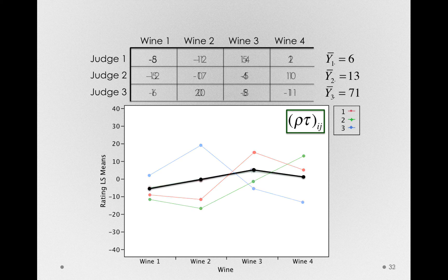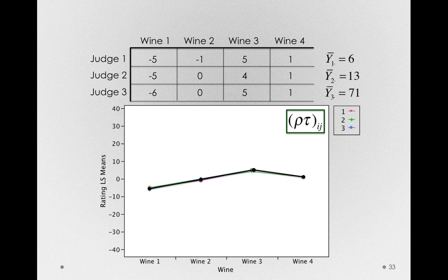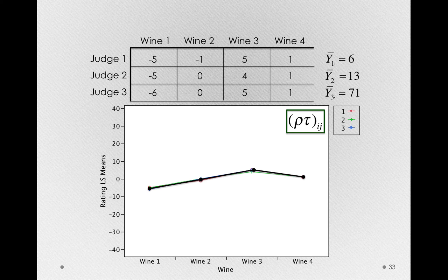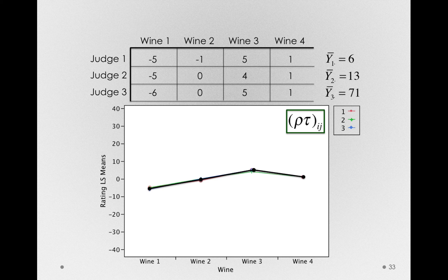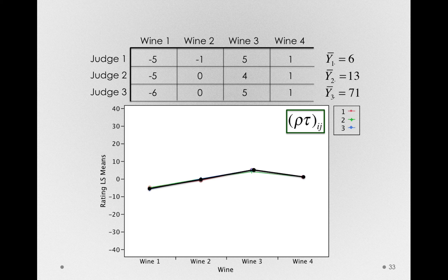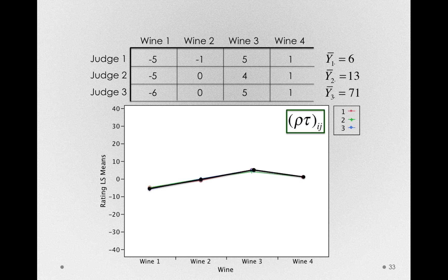So that interaction term is actually what is capturing error in our model. And for even more complicated models we'll see later, the interaction terms with subject will be the error terms we'll look to. So in this case, we only have one interaction term, one error term that is capturing the stability of the effect, the interactions between tau and rho.